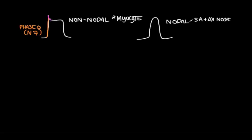Potassium channels open. Sodium no longer goes into the cell, and as potassium now leaves the cell, we enter phase 1, which is mediated by potassium channels. We get this slight dip in voltage, which brings us into phase 2.